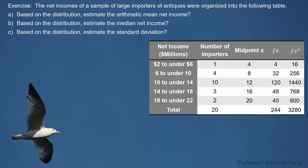For the next column, we use frequency 1 multiplied by midpoint 4, giving 4. For the following column, we use frequency multiplied by midpoint squared. The reason for this column is that we are going to use its values in the formula for calculating standard deviation.